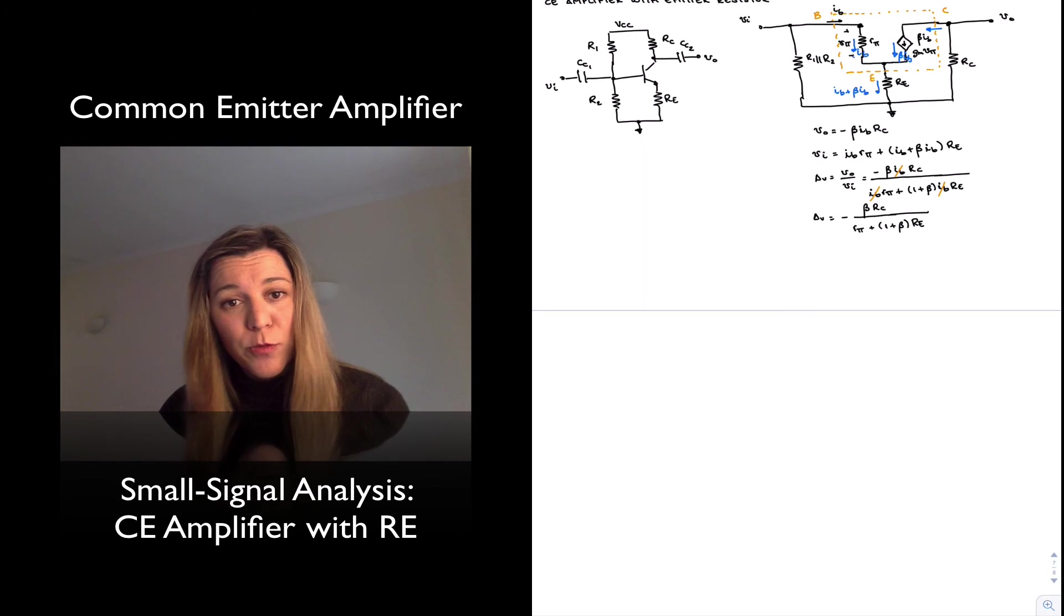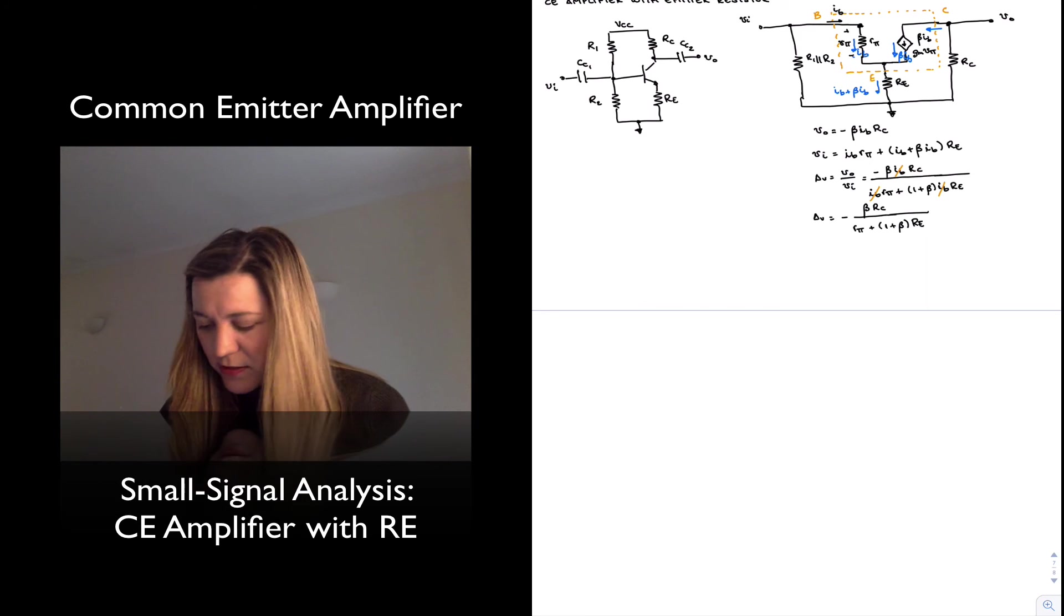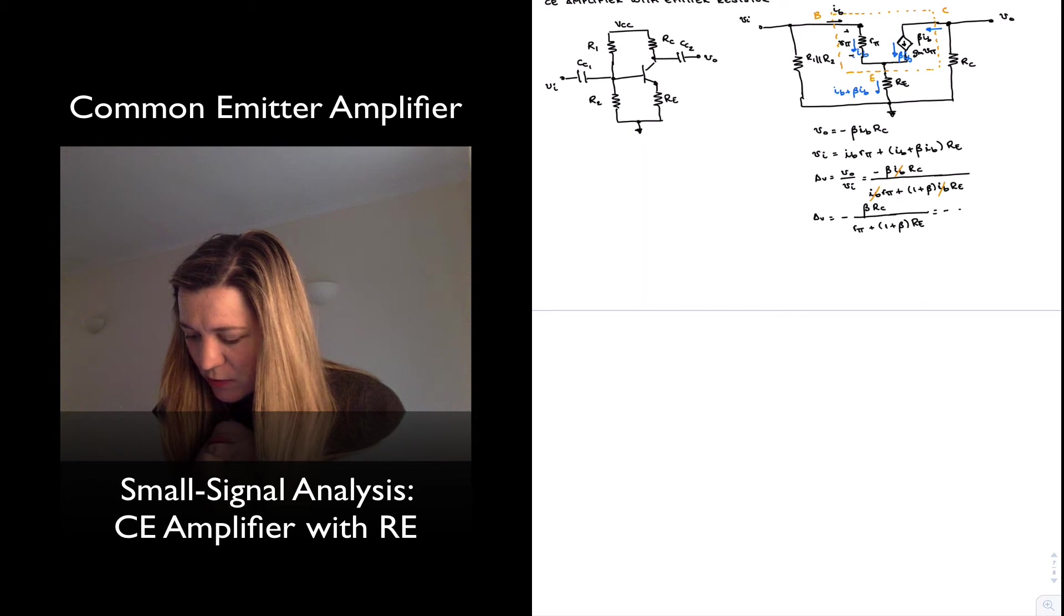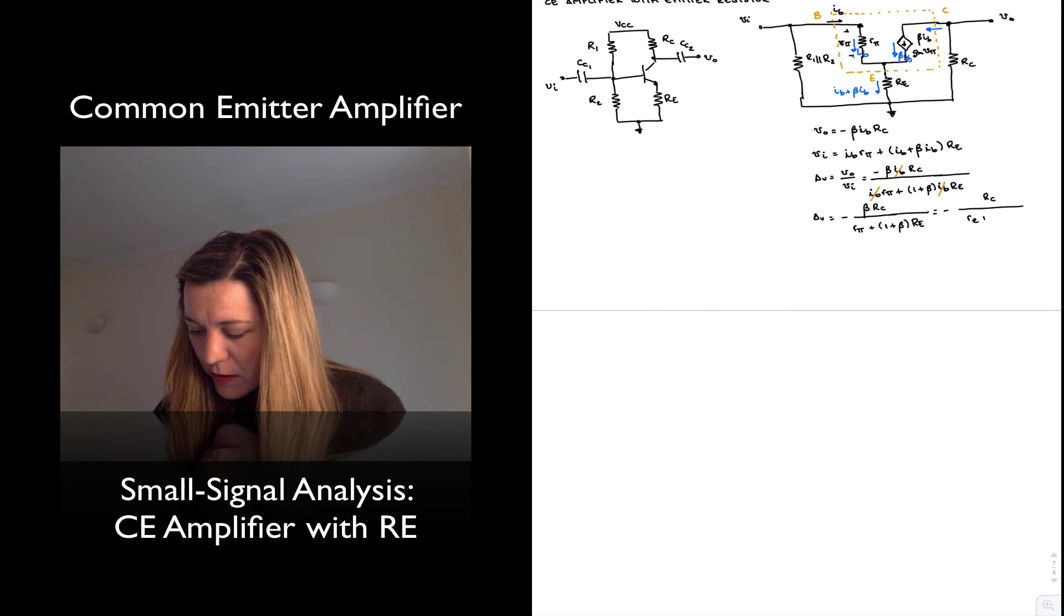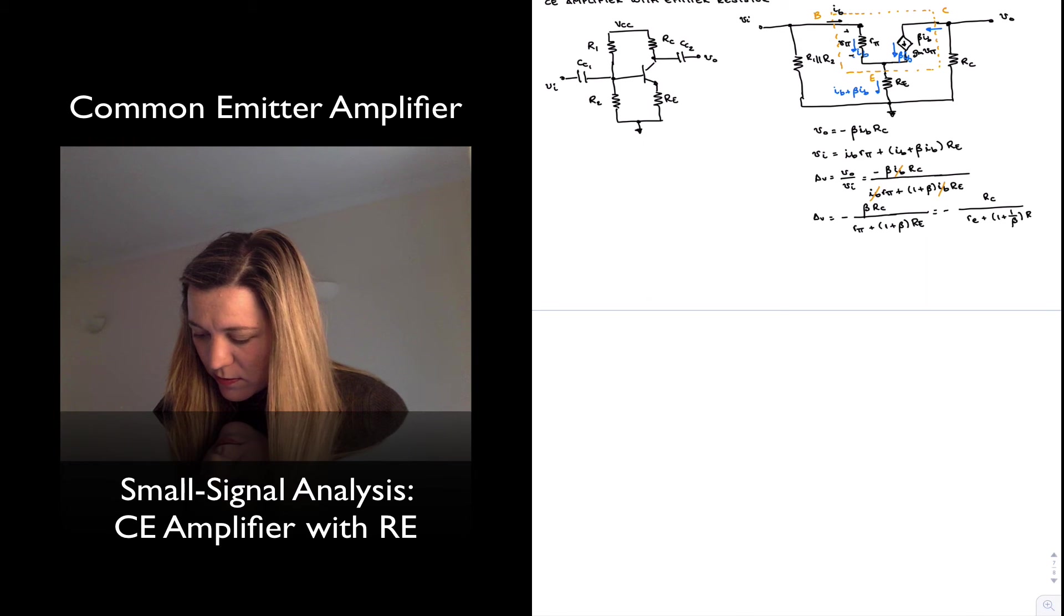I can divide numerator and denominator by a factor of beta, and that will yield negative R_C, and then r_pi divided by beta will be little r_e plus (1 + 1/beta) times R_E.